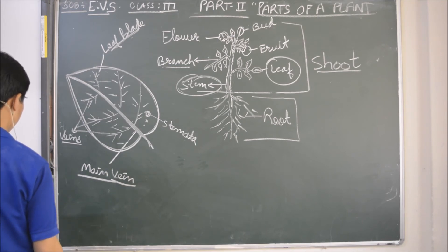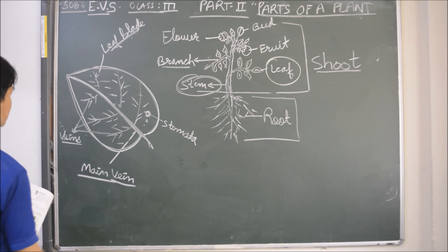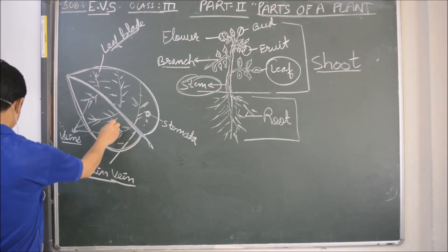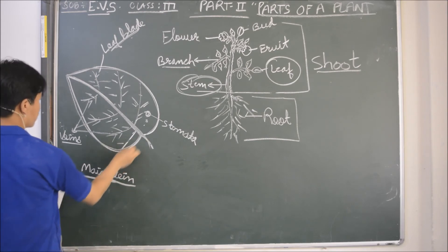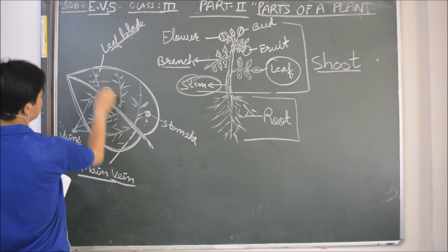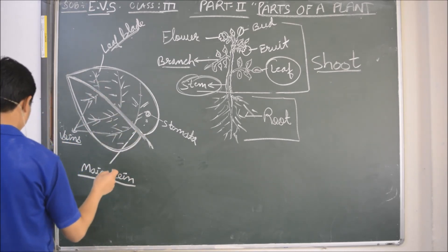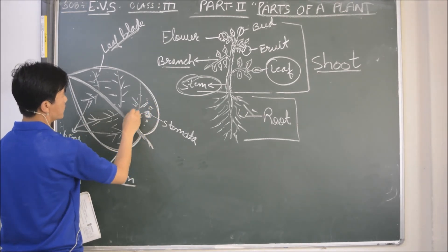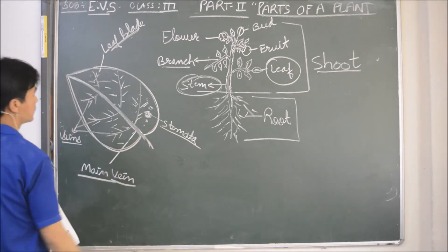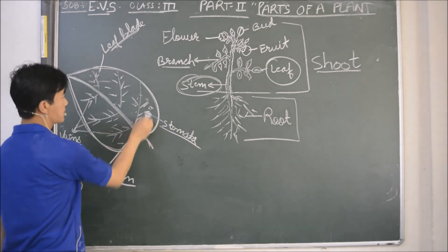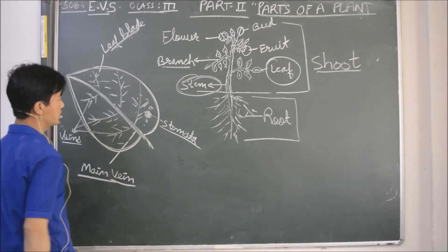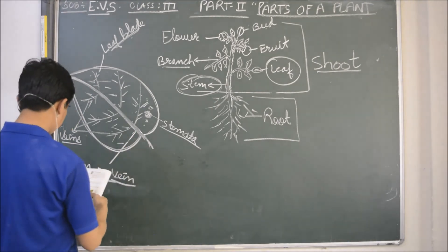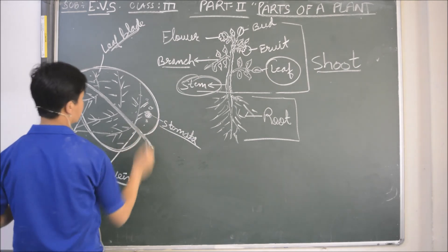And therefore, we also call leaves the food factories. Leaf is also called food factories because they prepare food. They prepare food. So veins carry water to the leaves. A number of small openings called stomata are present in the leaves. Like small holes, tiny small. Small, small holes. It's called stomata. It releases oxygen and takes carbon dioxide. So with the help of this stomata, plants or leaves release oxygen that we take. That's why plants are very important for us. They help in exchange of gases.